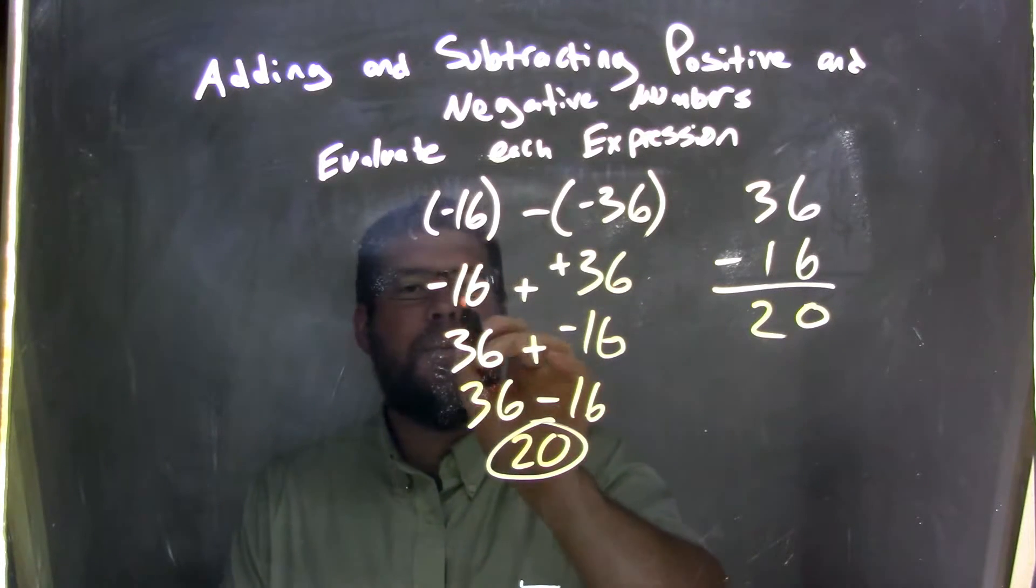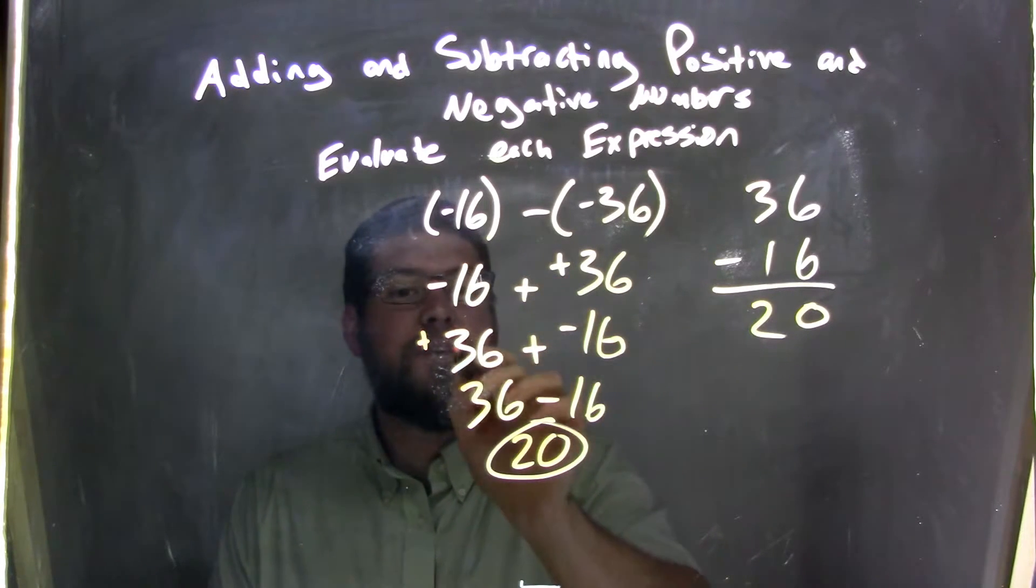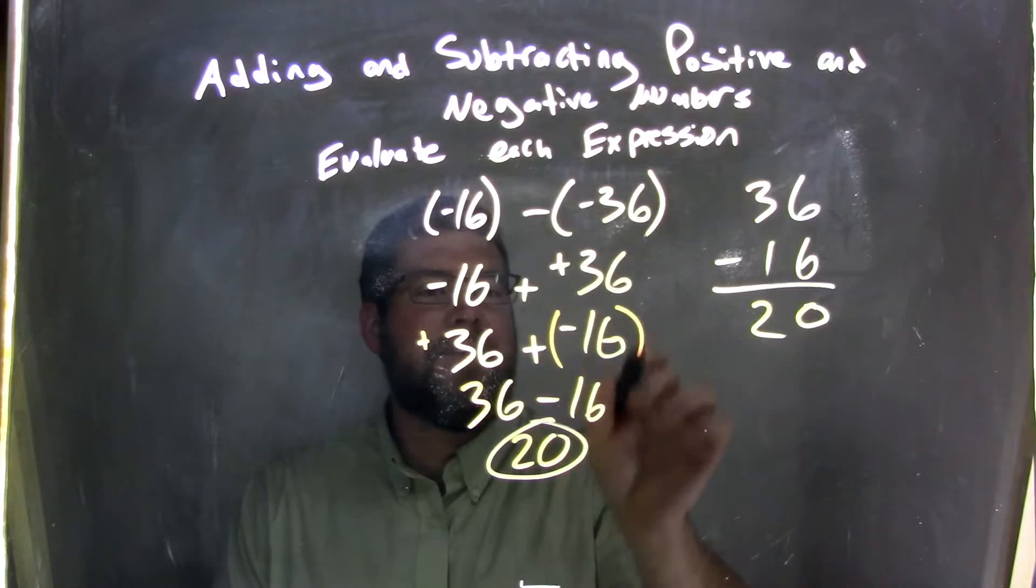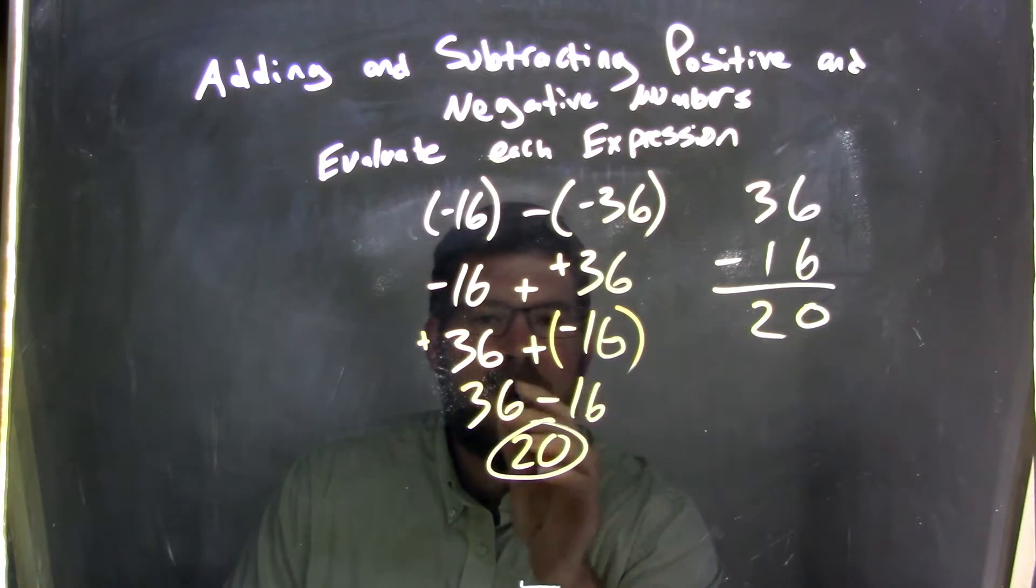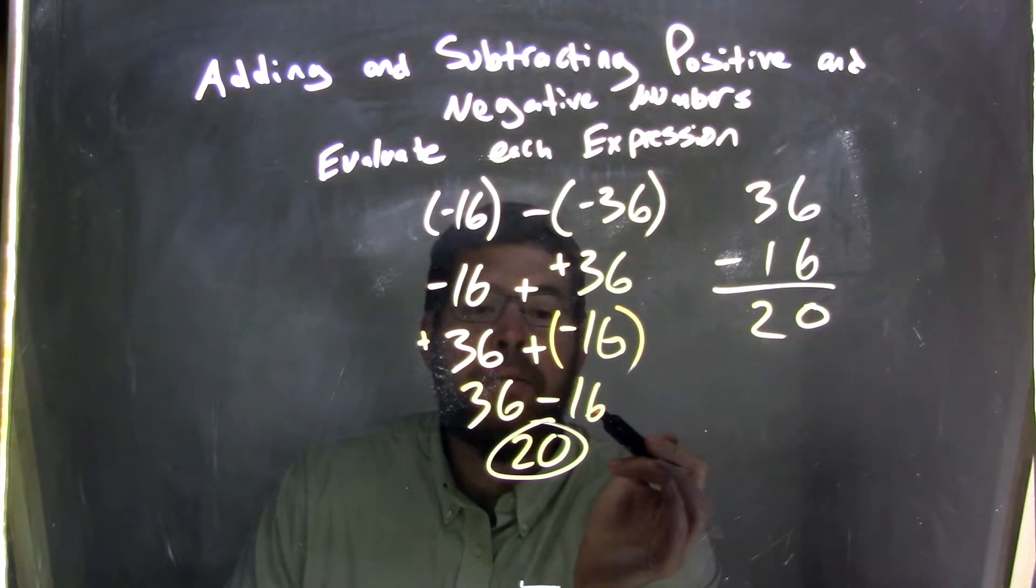By the commutative property, we can rewrite that to be 36 plus a negative 16. And then we know that adding a negative, 36 plus a negative 16, is the same thing as 36 minus 16.